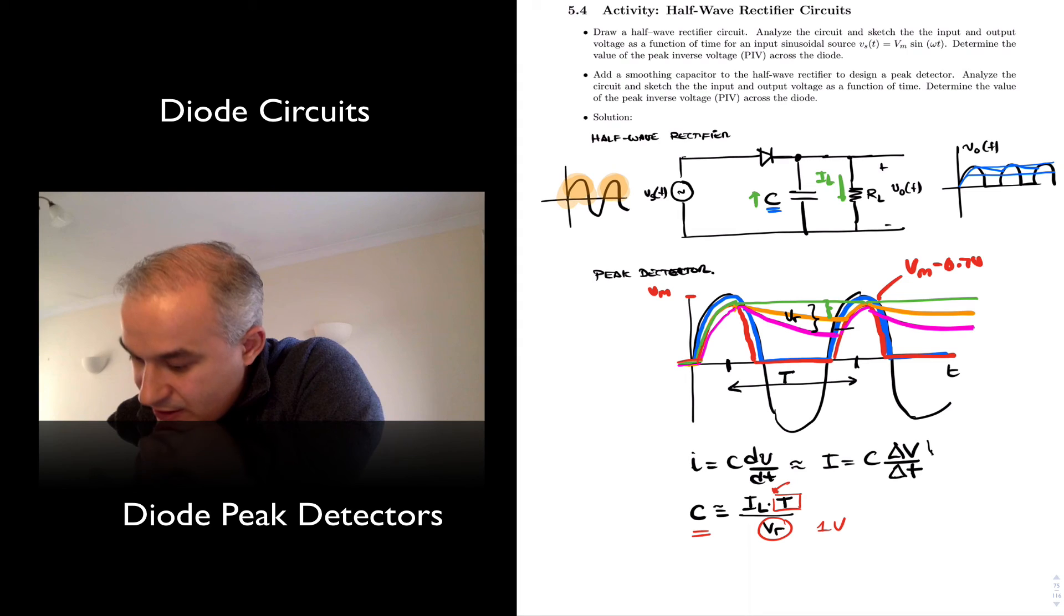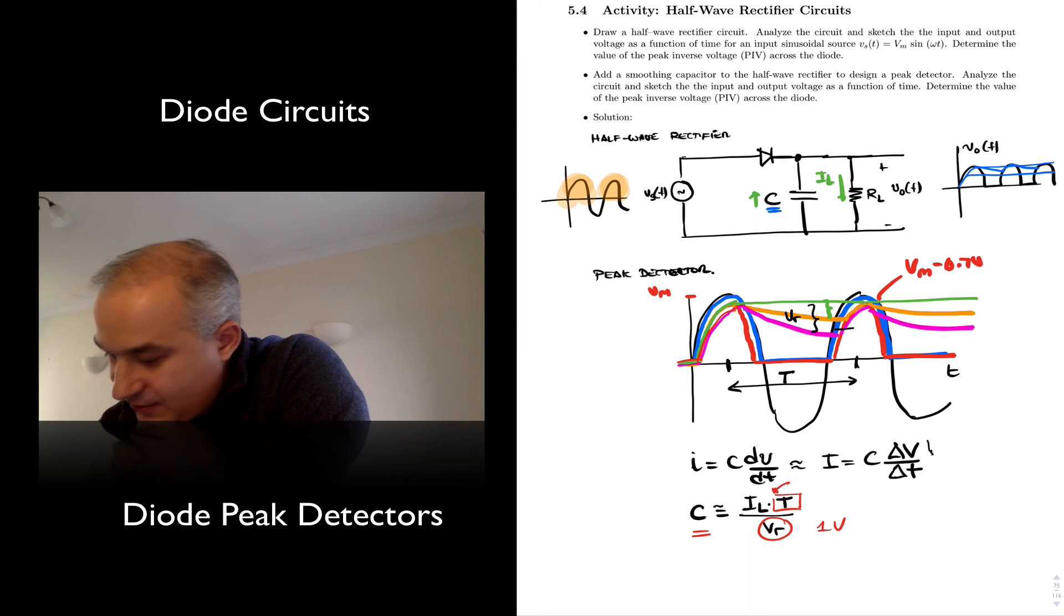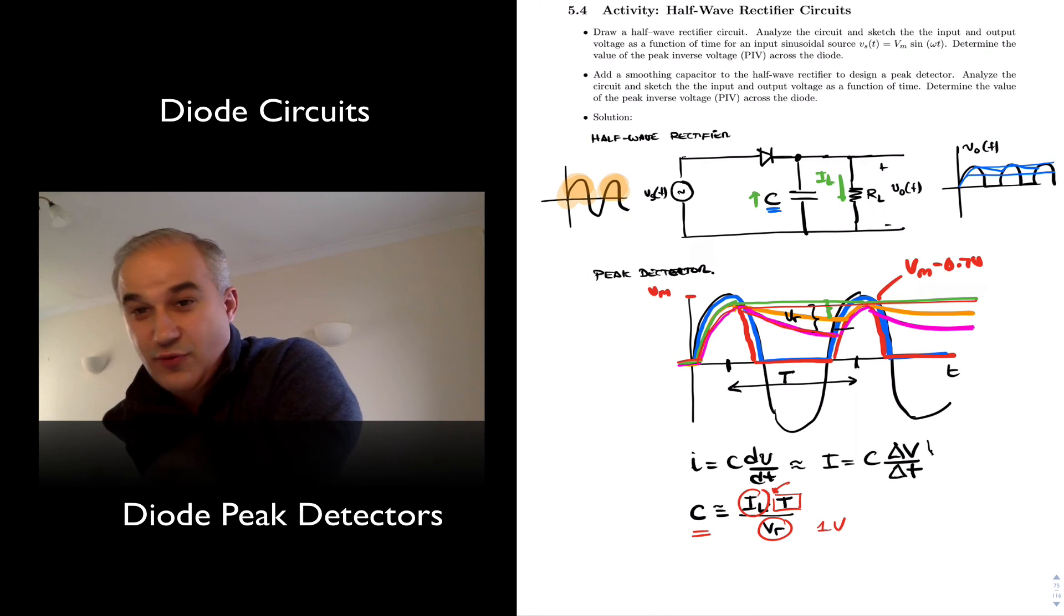in order to detect the peak and either keep it very much constant for a given load current, or for a particular ripple. This is a selection. Say, okay, one volt, or 0.1 volts, 0.5 volts, how much current you're supplying to the load, and what is the timing.